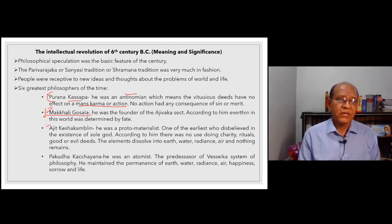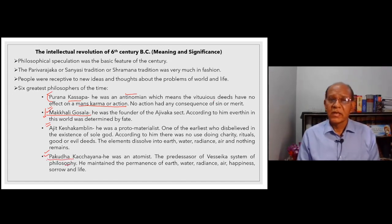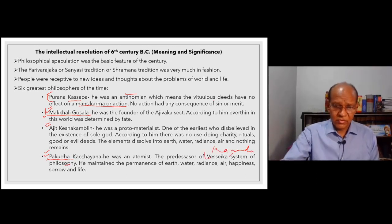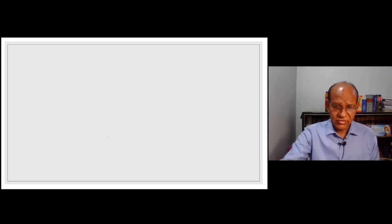Ajit Kesh Kamlin was another great scholar. He was a materialistic philosopher. Pakud Kachain was an atomist. Pakud Kachain was the one who propounded the Vaisheshika system of philosophy. No doubt this system of philosophy is associated with the name of Kanad, but its propounder at the basic level was Pakud Kachain.